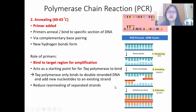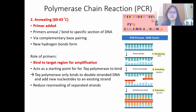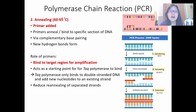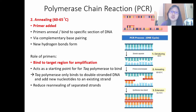Number three, the primers also reduce the re-annealing of separated strands. After denaturation, the two strands separate, and sometimes when we reduce the temperature they can stick back together. But because the primers stick first, this makes them more likely to stay separate — so the two strands won't rejoin. The specific annealing temperature is a range of 60 to 65 degrees because it really depends on the sequence of the primer. The sequence of the primer does affect the annealing temperature.